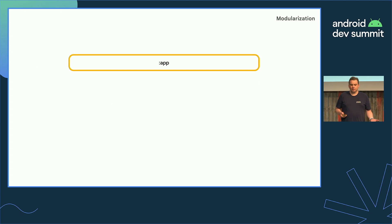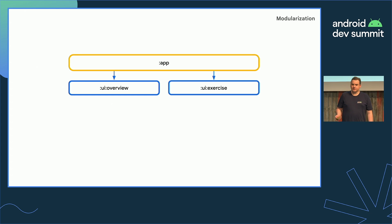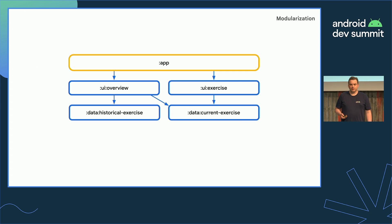In your project today, you'll have a top-level app module containing scaffolding classes that bind the rest of the code base — such as main activity, app class, and top-level navigation. This depends on UI modules, which usually correspond to a screen or a collection of closely related screens. UI modules depend on data modules, which aren't tied to a particular screen but encapsulate all the data and business logic for a particular domain or data type. For example, the overview module depends on both the historical and current exercise modules because it needs to display both for the overview screen.